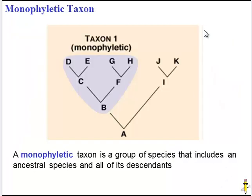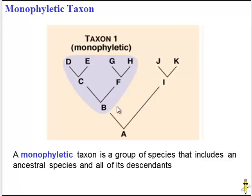A final note about phylogenetic trees: anytime you see a group of organisms that includes all the descendants along with its ancestor, this is known as a monophyletic taxon. A taxon is simply a group. So a monophyletic taxon includes all the descendants and their ancestors.